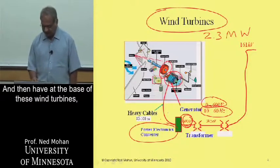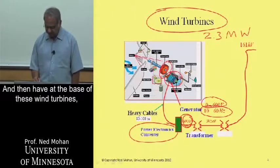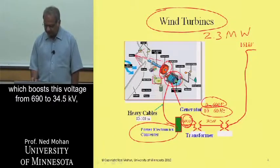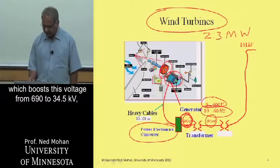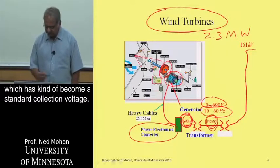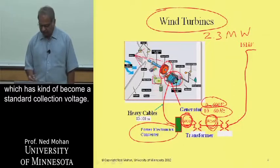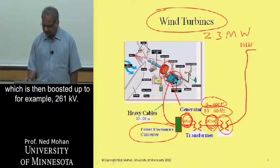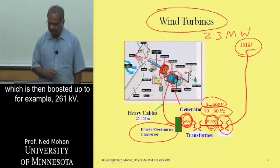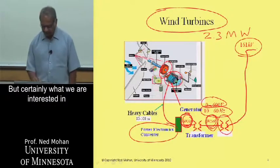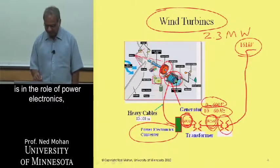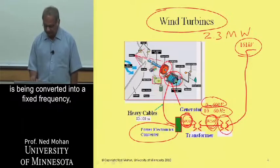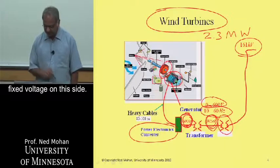At the base of these wind turbines, there is usually a transformer which boosts the voltage from 690 volts to 34.5 kV, which has become a standard collection voltage. Many wind turbines are connected to this collection voltage, which is then boosted up to, for example, 261 kV. What we are interested in is the role of power electronics, where variable frequency, variable voltage is being converted into fixed frequency, fixed voltage on the output side.